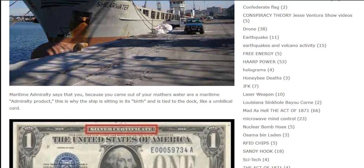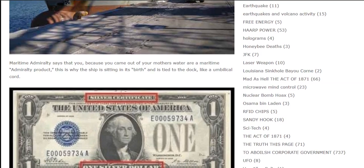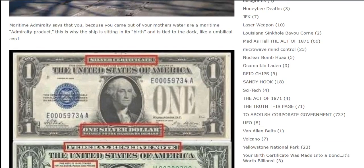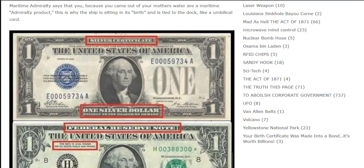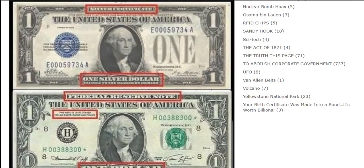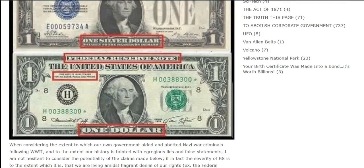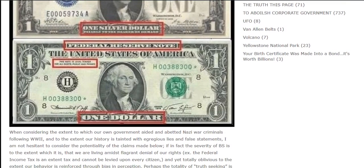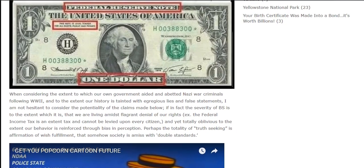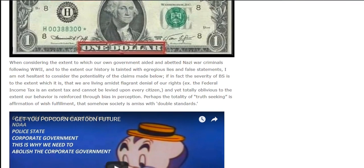When considering the extent to which our own government aided and abetted Nazi war criminals following World War II, and to the extent our history is tainted with egregious lies and false statements, I am not hesitant to consider the potentiality of the claims made here — if in fact we are living amidst flagrant denial of our rights, such as the federal income tax being an excise tax that cannot be levied upon every citizen, yet we remain totally oblivious. The extent of our behavior is reinforced through bias and perception. Perhaps the totality of truth-seeking is affirmation of wish-fulfillment, and that society is amiss with double standards.